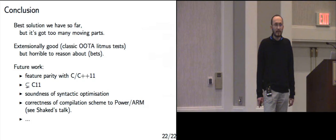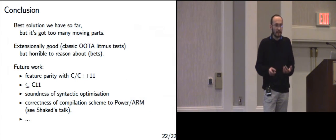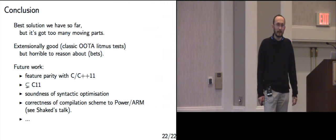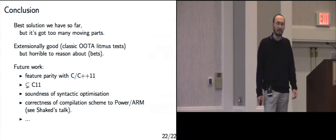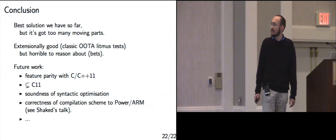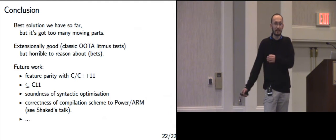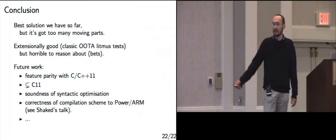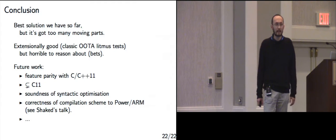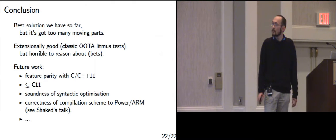It seems this memory model constructs executions incrementally, where reads have to read values that are already there, unlike C11 which allowed self-justifying executions. This is validated by litmus testing on classical out-of-thin-air examples and a few more. It seems to do the right thing for the fragment of C with relaxed reads and writes, non-atomic reads and writes, and locks. It also seems to handle the problem of undefined behavior combined with weak memory concurrency found by Batty et al. The basic idea is to treat undefined behavior as a joker for the transformations on event structures. It seems to be the best solution so far — it avoids out-of-thin-air, but has a bit too many moving parts, and reasoning about it is complex due to towers of exponential complexity. Future work: extend to reach feature parity with C11, prove strict inclusion in C11, and check hardware implementability.